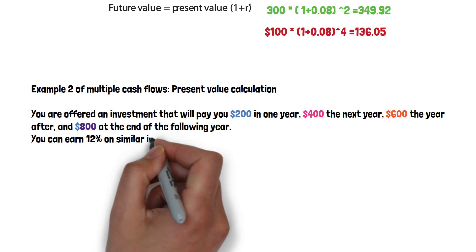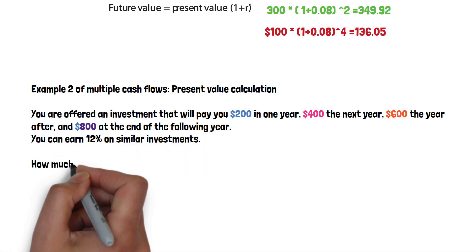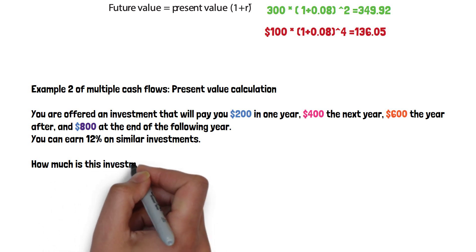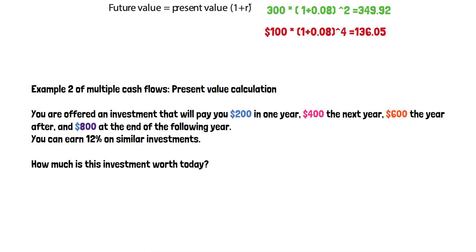We assume that you can earn 12% on similar investments. This tells us the discount rate we are going to use is 12%. The question is how much is this investment worth today. So we are calculating the present value. Again, let's draw the timeline.